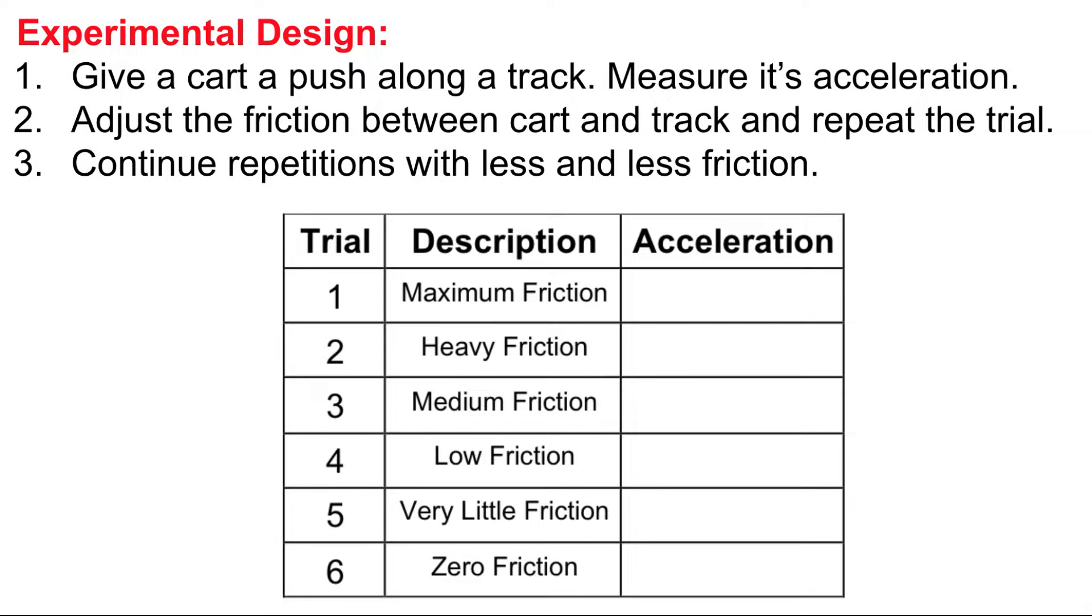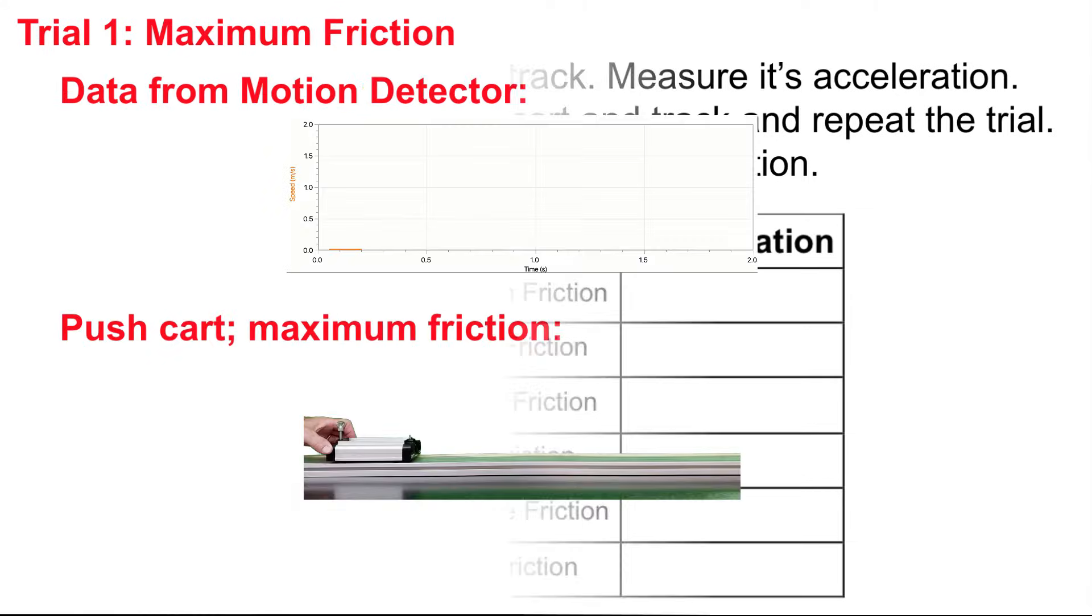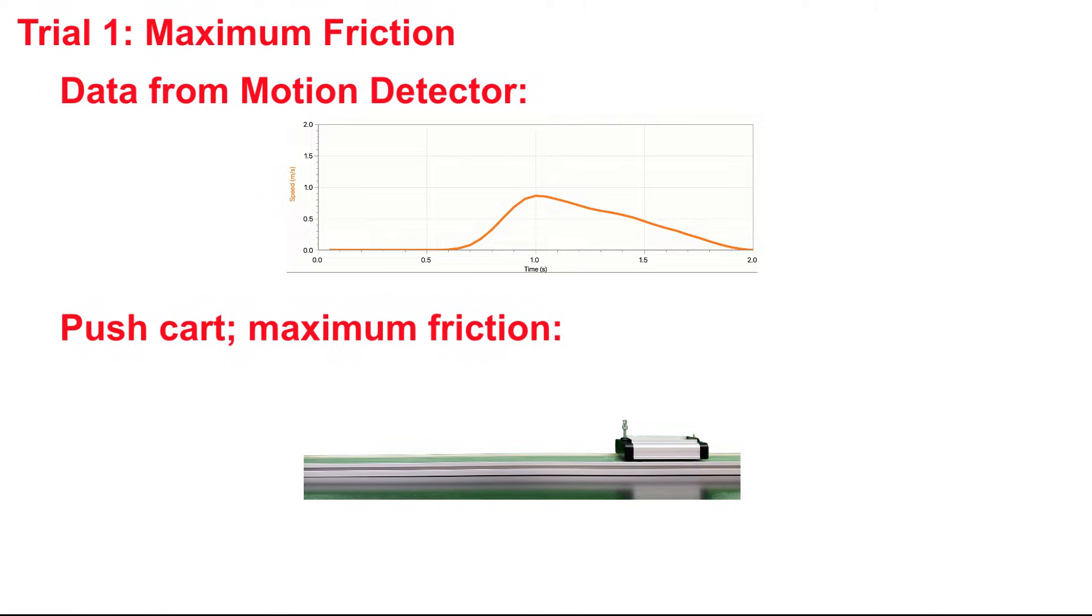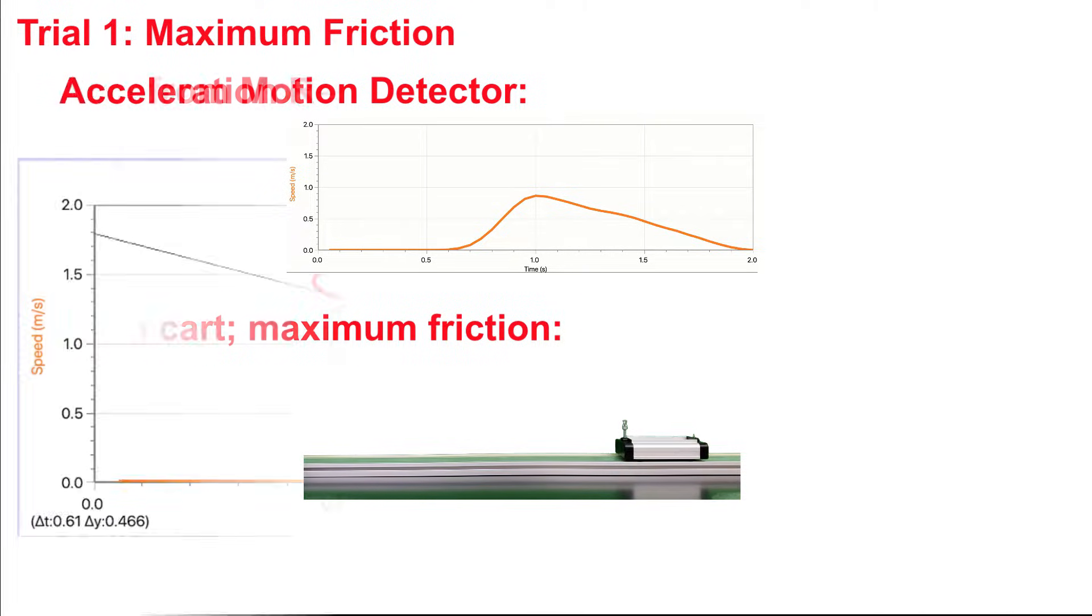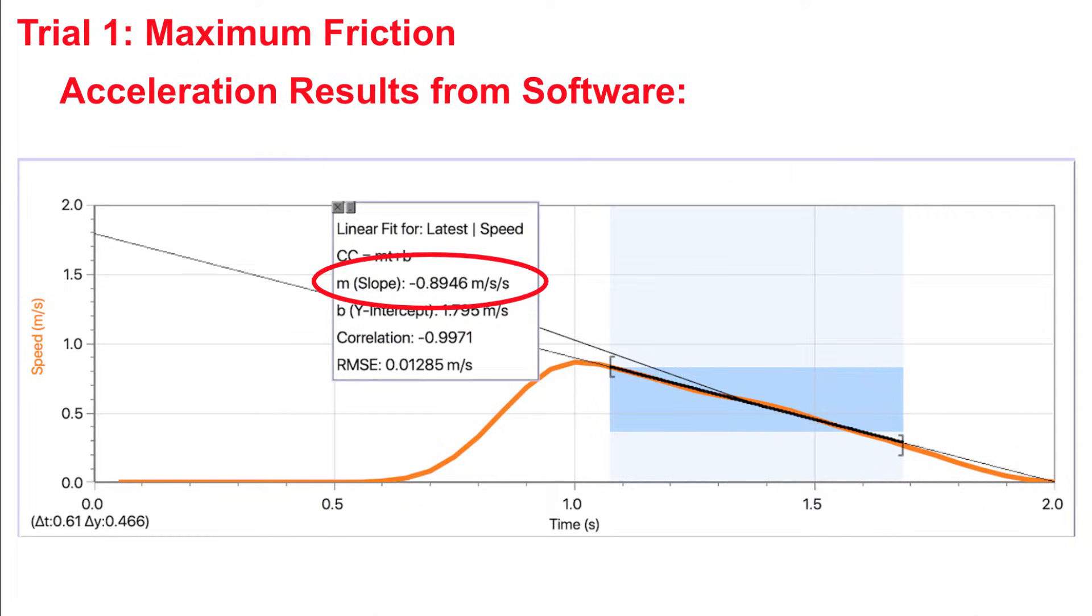Here's our first trial with maximum friction. This is a speed versus time graph. If we find the slope of the line, what we're finding is the acceleration. It's negative 0.895.